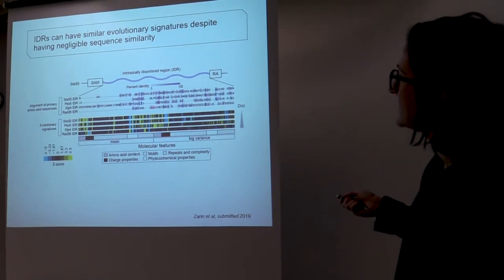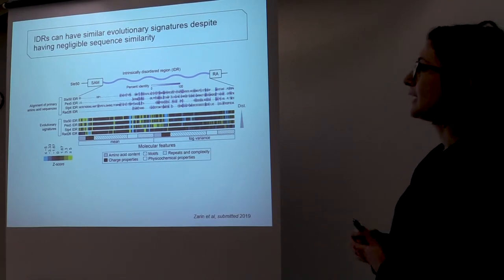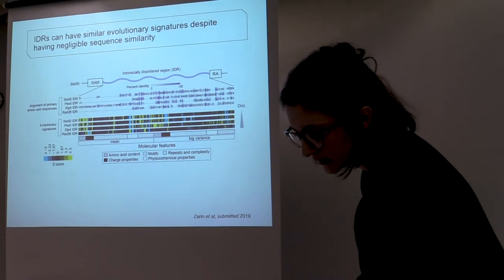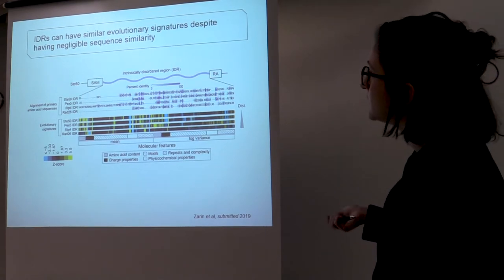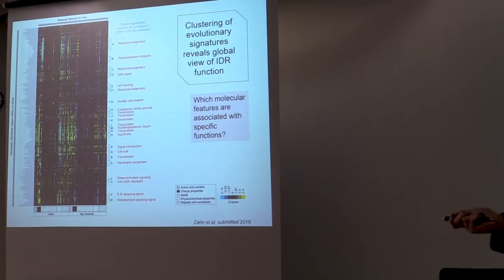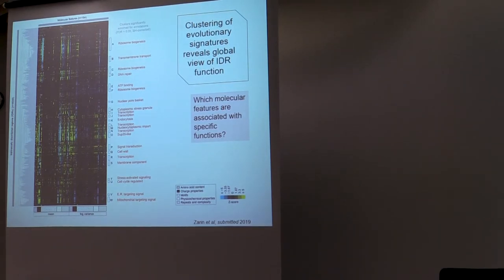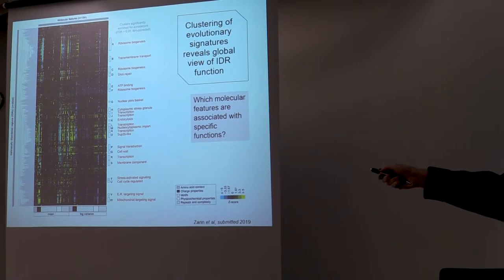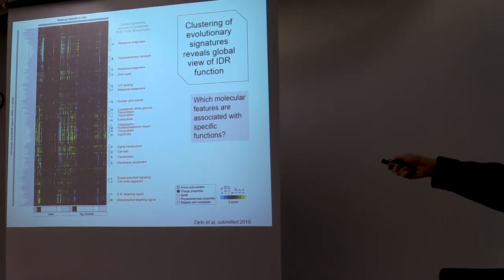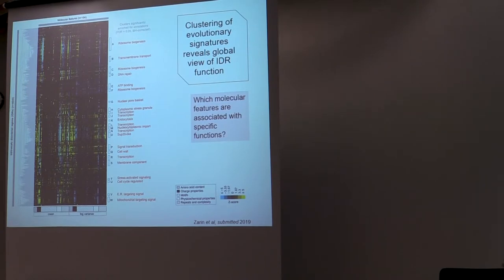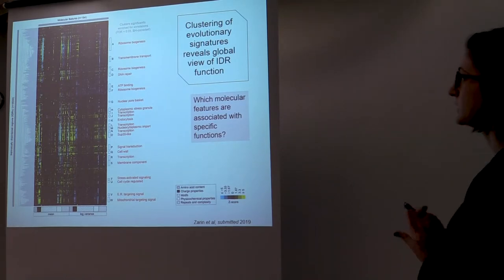So what we can do with these evolutionary signatures is we can get them for an entire proteome. In our case, we did this analysis on the yeast proteome. And what we get out of this is a global view of IDR function. So this is kind of our result from our proteome-wide analysis. Each row here is an individual disordered region. And the columns are the different molecular features. And basically here we use hierarchical clustering to understand if there is any structure in the data, if there are any disordered regions that share evolutionary signatures.